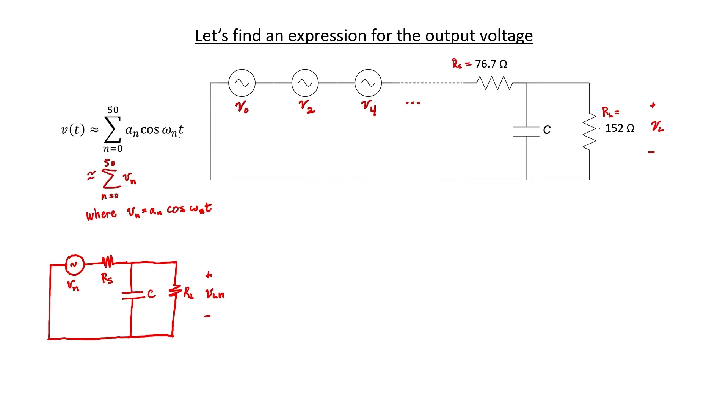Let's now convert this circuit into phasor form. If we look up here at our expression for v sub n, we see that each component has an amplitude of a_n and a phase of zero degrees.